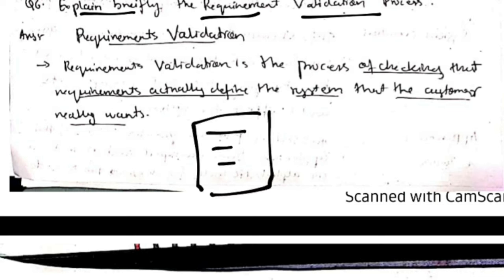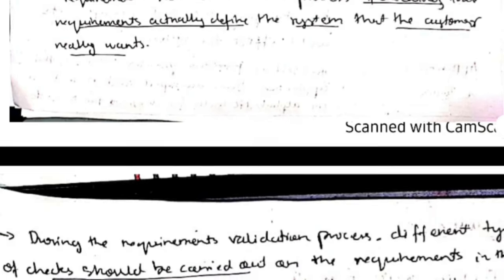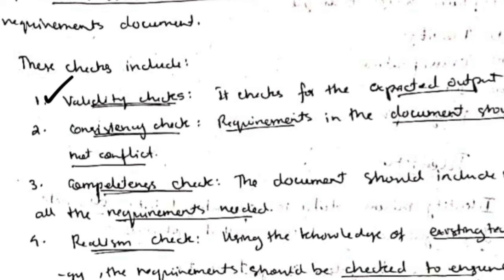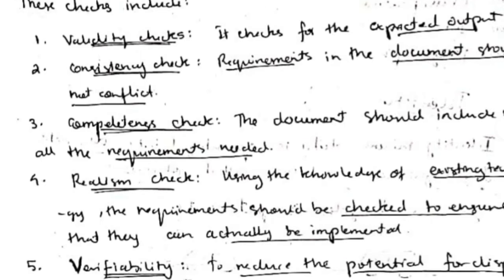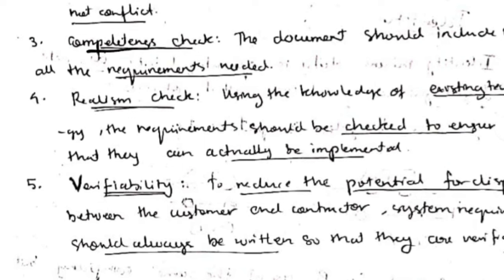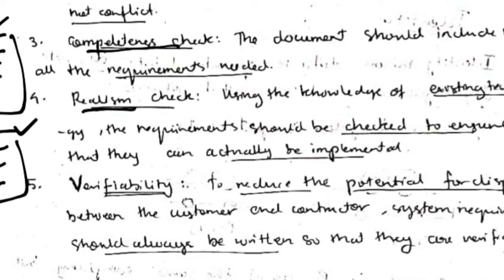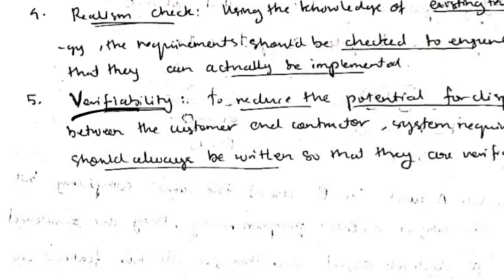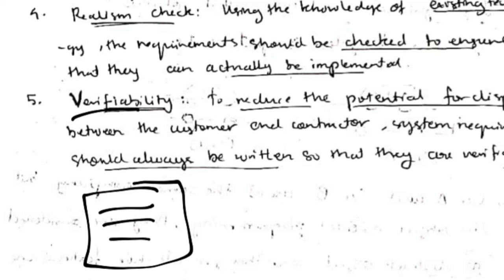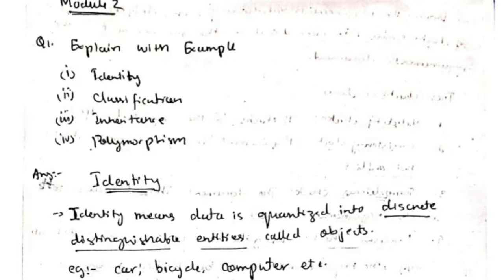Requirements validation means showing the documented requirements to the customer for verification. The steps are: validity check — confirming the product gives the expected output; consistency check — ensuring no conflicts between requirements; completeness check — confirming all customer requirements are mentioned; realism check — verifying requirements can actually be implemented; and verifiability — confirming requirements are correct with the customer.